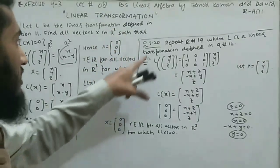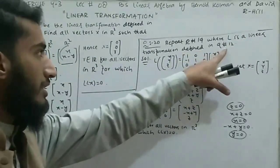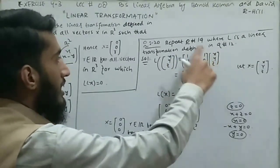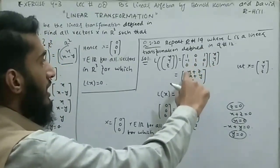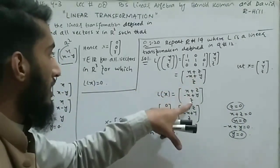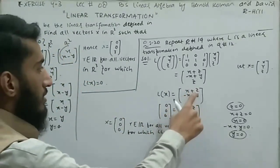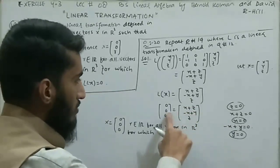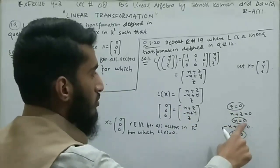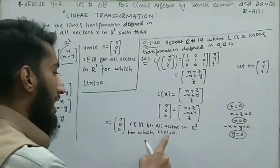Question 20 repeats the same task using the linear transformation from question 12, defined by the matrix [1,0,1; -1,1,0; 0,0,1] applied to (x,y,z), giving (x+z, -x+y, z). Setting this equal to (0,0,0): from the third row z = 0, then x = 0 from the first row, and y = 0 from the second row. So the only solution is x = (0, 0, 0).